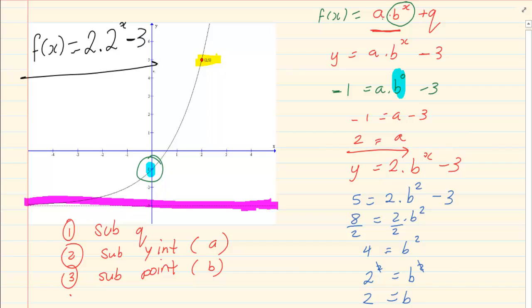So our final equation is f of x is equal to 2 times 2 to the power of x minus 3. Thank you for watching.